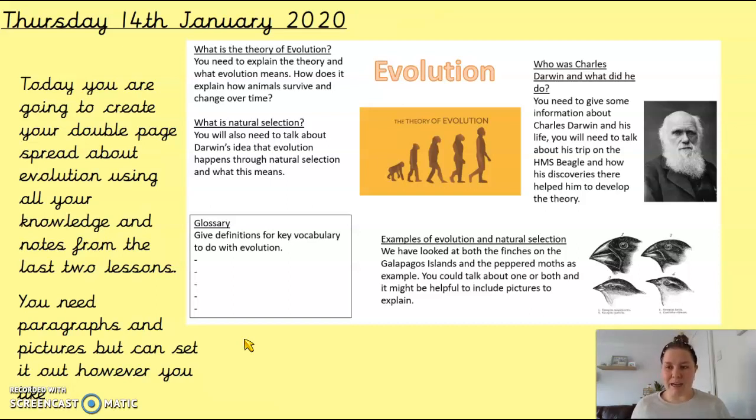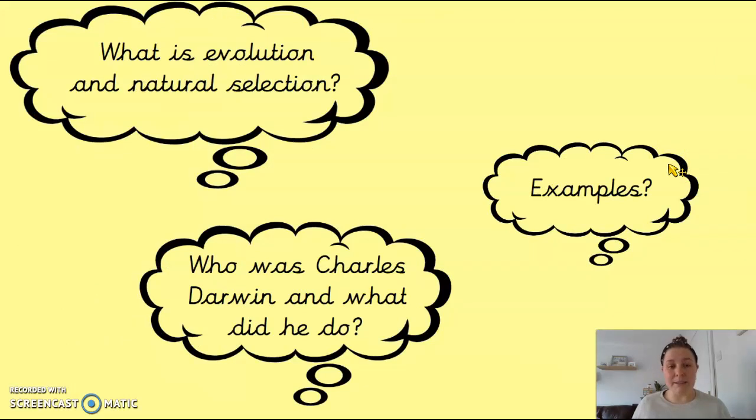I'm going to go through now just a couple of those points on there in case you're feeling a bit shaky about what those things actually mean. So we'll just remind ourselves, what is evolution? What is natural selection? Who's Charles Darwin? What did he do? And those examples I would just talk you through. So you might feel like you don't need to hear this, in which case stop the lesson now you know what you need to do. Go off and spend your time putting together your double page spread. If you feel like you need me to talk you through it again, then listen on, okay?